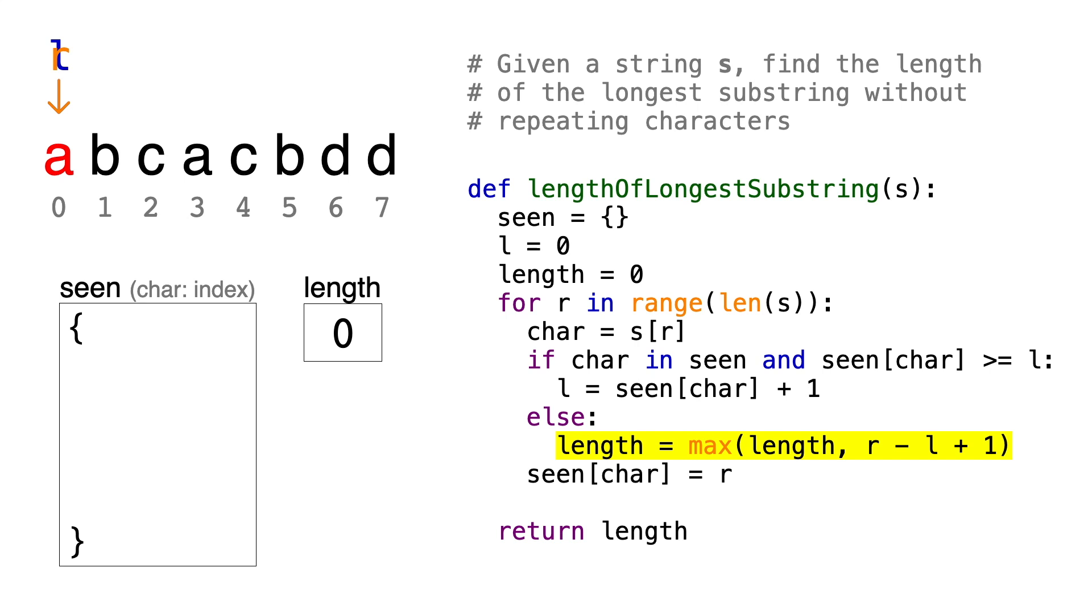We have to add 1, because we're including both the left and right pointers as part of the substring. So right now, this would be 0 minus 0 plus 1, so our substring is one character long, it's just the letter A. Then we'll take the maximum of that number and the length variable to make sure that the length variable always contains the maximum length encountered so far. So 1 is greater than 0, so we'll update length to be 1.